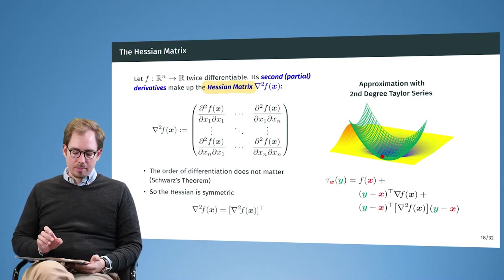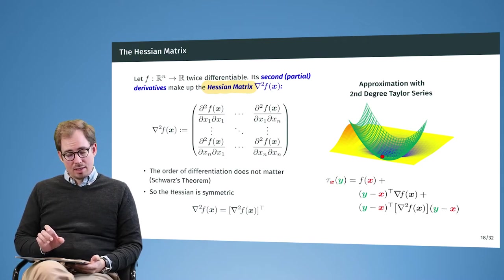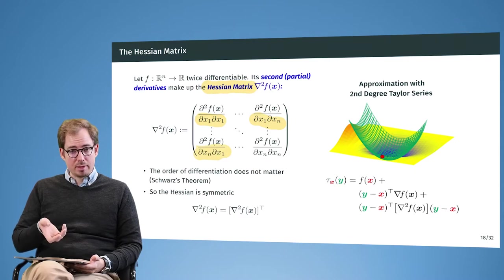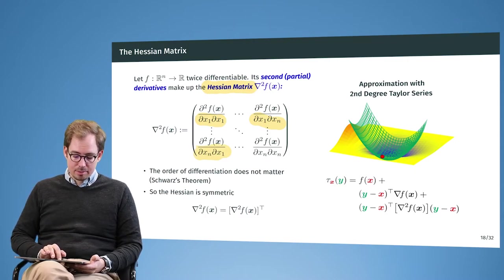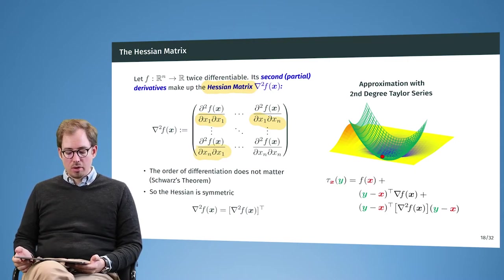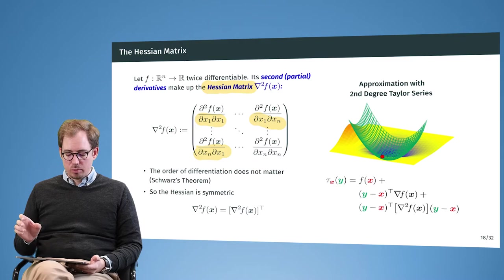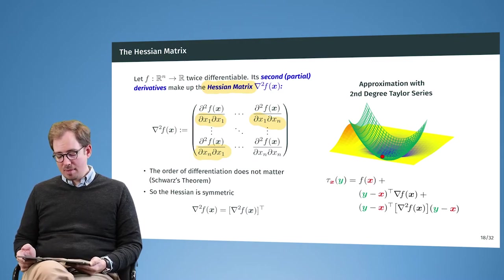And the Hessian matrix is actually symmetric. So we can take the transpose of it and it will stay identical. Because the order of the differentiation does not matter. So if we first derive by x1 and then by x2 or first by x2 and then by x1, the end result will be identical.